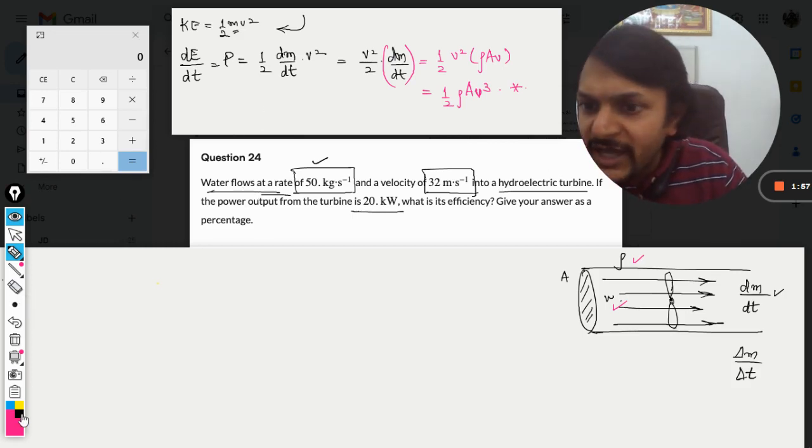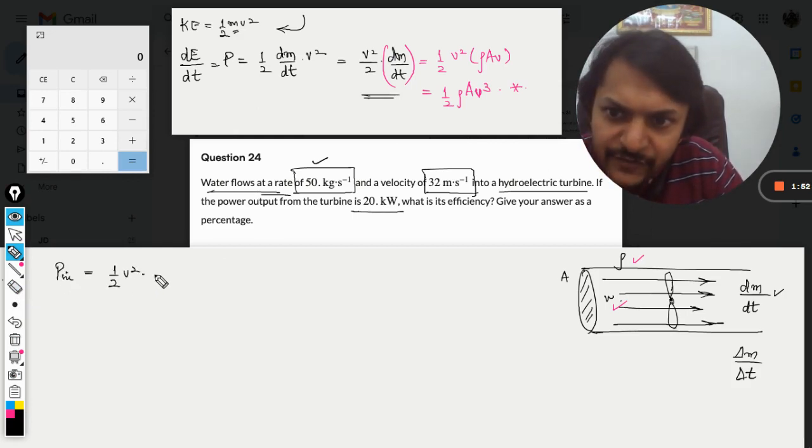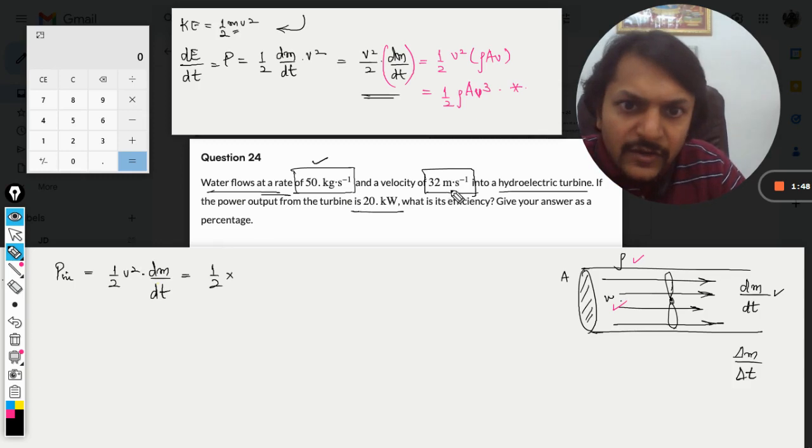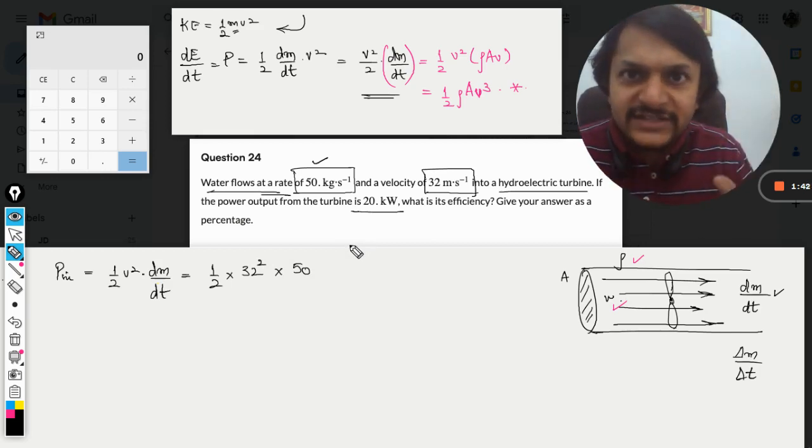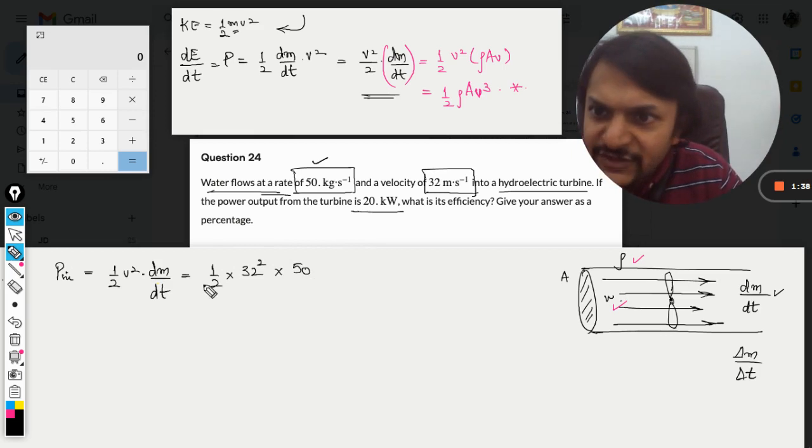Now I am coming back to our question. I am going to use this formula. Our power input will be given by half v squared into dm/dt, which becomes: velocity is 32 squared into dm/dt is 50 kg per second. All the units are SI, so we can just calculate without any problem.